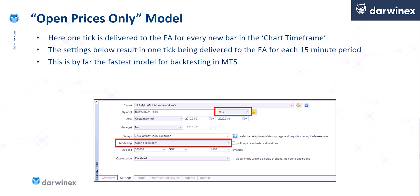This model is by far the fastest for backtesting in MT5. Considering the M1 chart getting one tick per minute, compared to the real tick scenario where there were 123 ticks in a minute, this would be approximately 100 times quicker at processing. Obviously running this model on the 15-minute chart would be even quicker.